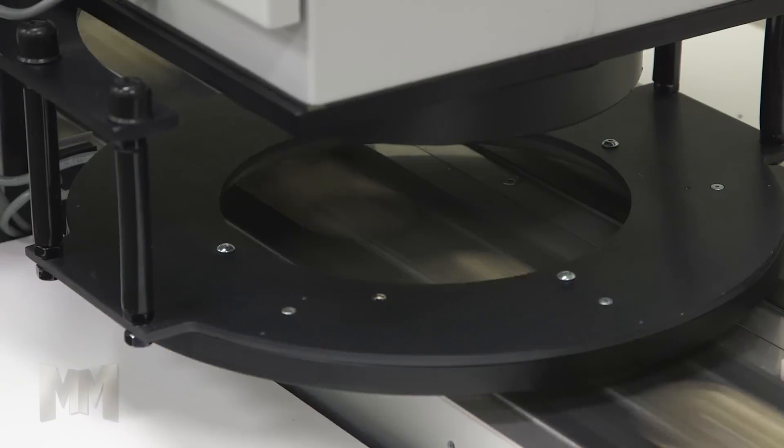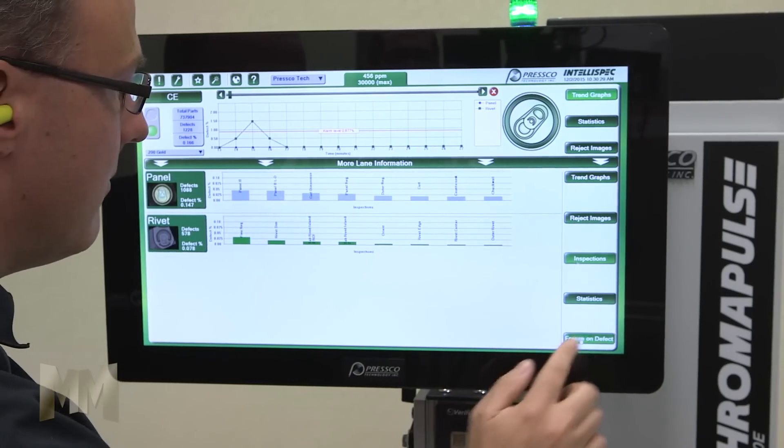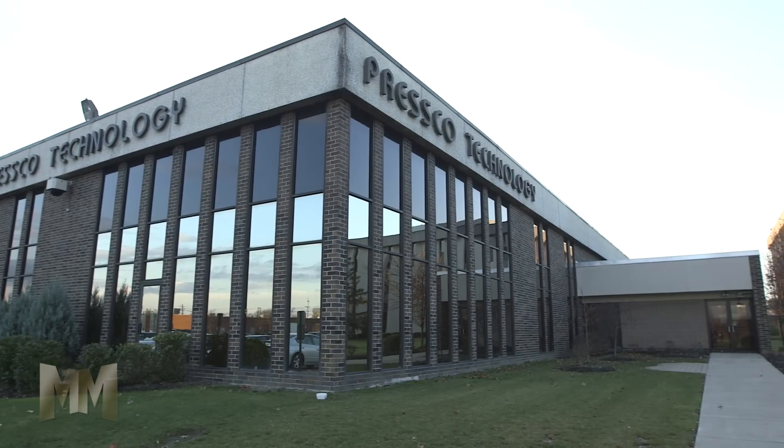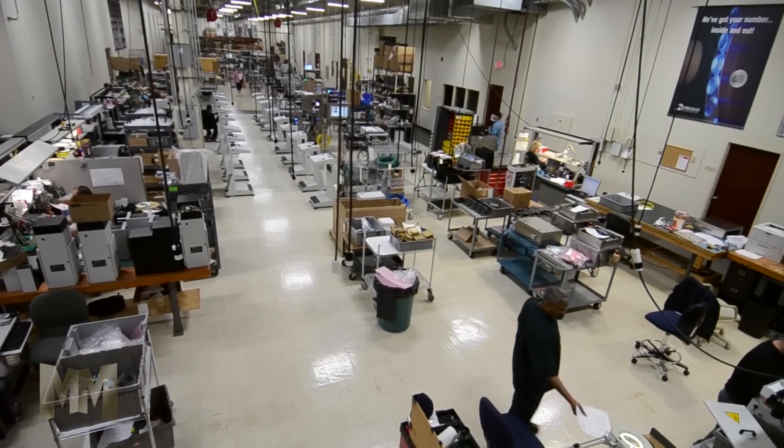For precise high-speed defect detection, food, beverage, and packaging companies turn to Presco technology. Based in Cleveland, Ohio, Presco is a global leader in advanced automated vision systems.